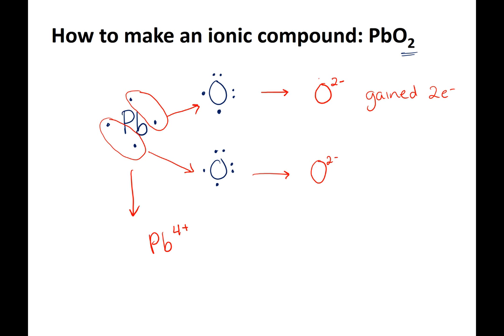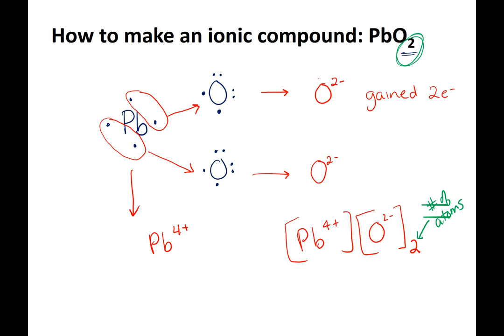When we combine this to show our ionic molecule, we write lead first - the cation - then oxygen with two of them. The subscript goes on the outside of the bracket to represent the number of atoms. Lead has a plus-four charge, and when there's no subscript on the lead bracket, it's implied that there's one. That gives us PbO2 with lead four-plus and oxygen two-minus each.